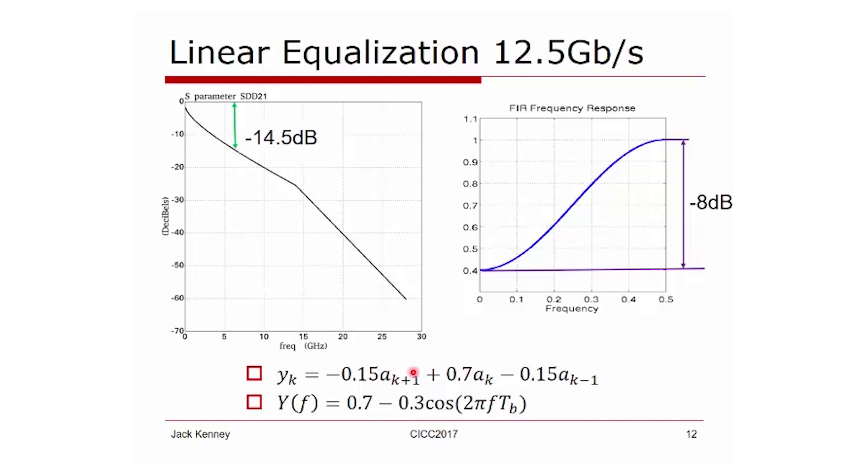What I'm going to do is use strictly transmit FIR. I have a precursor and a post cursor, which are both minus 0.15. Then I have my cursor multiplying AFK by 0.7. These values are conveniently chosen to give this nice expression for a Fourier transform at the bottom.